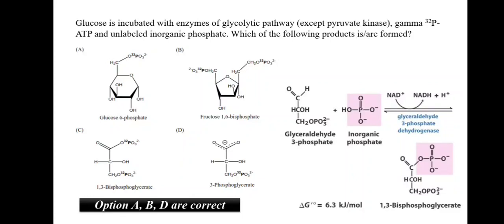Glucose is incubated with enzymes of glycolytic pathway except pyruvate kinase, gamma-32-phosphate ATP and unlabeled inorganic phosphate. Which of the following product is formed? To understand this, we should understand what glycolysis is. We know that the enzyme pyruvate kinase is used to convert PEP into pyruvate. The four options given here, none of them are PEP. Thus, we would not be needing the enzyme pyruvate kinase. Now, the second part of the question if you notice, they have given only the 32-phosphate ATP are labeled. Whereas, the inorganic phosphate are unlabeled.